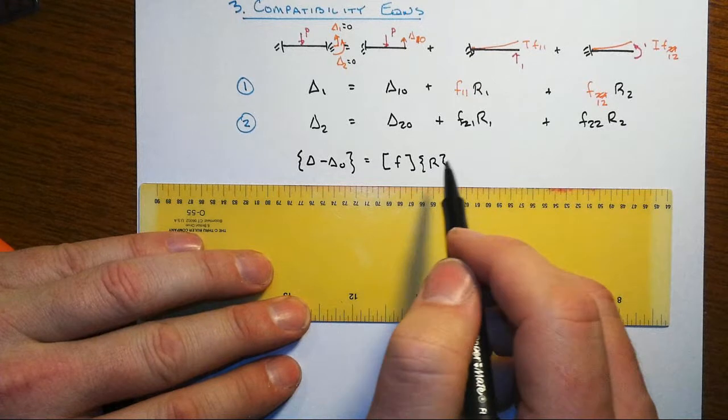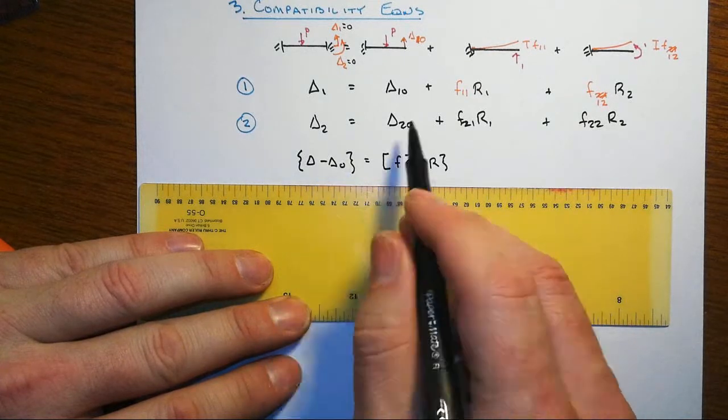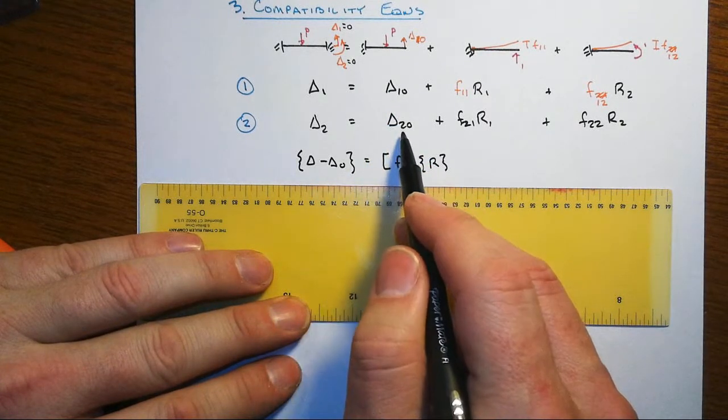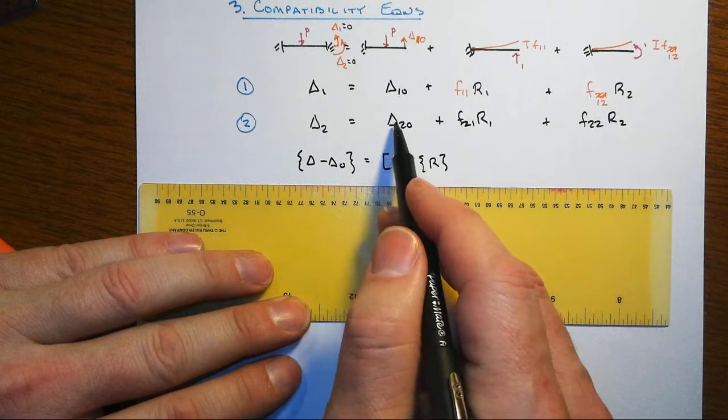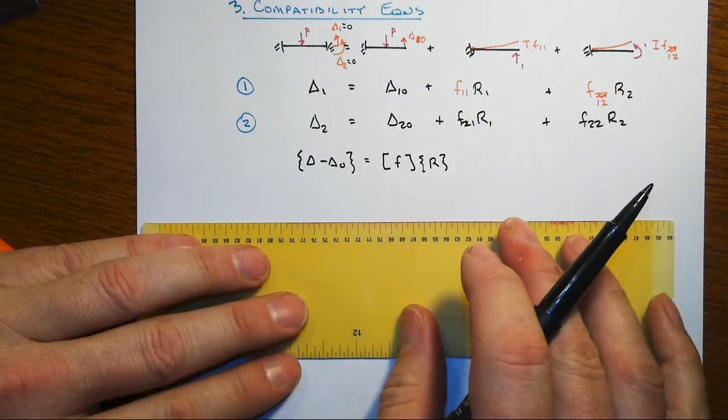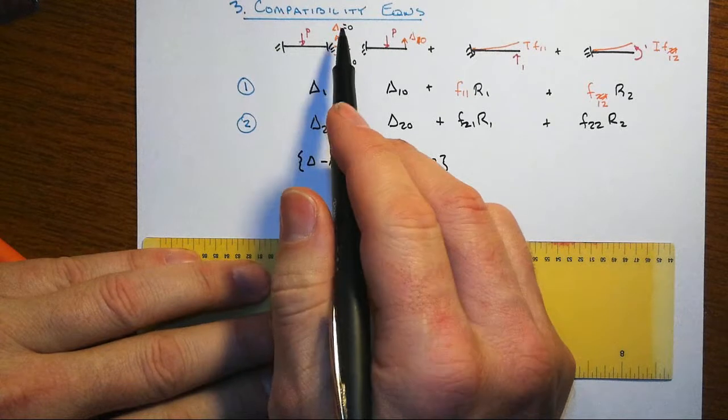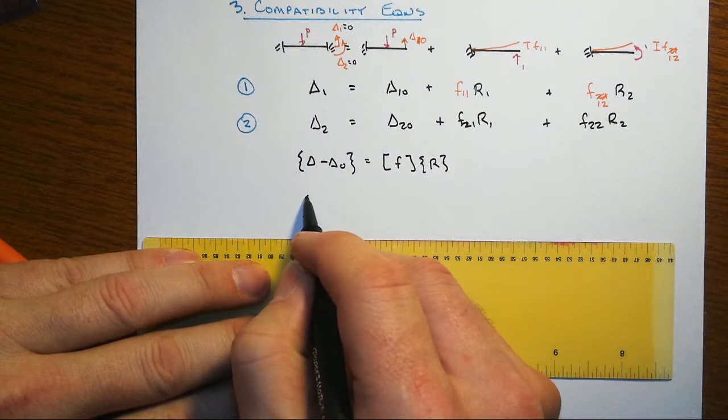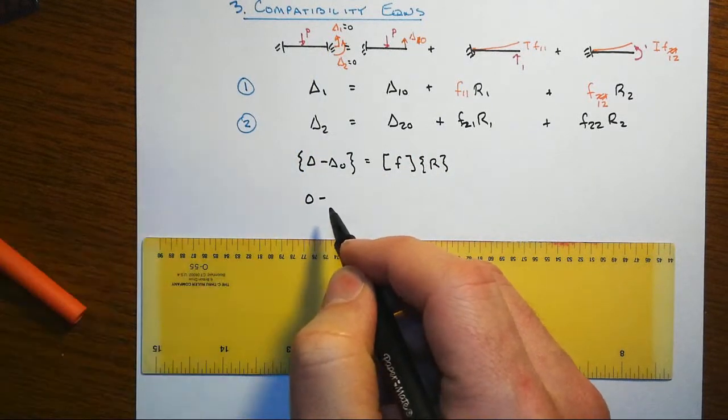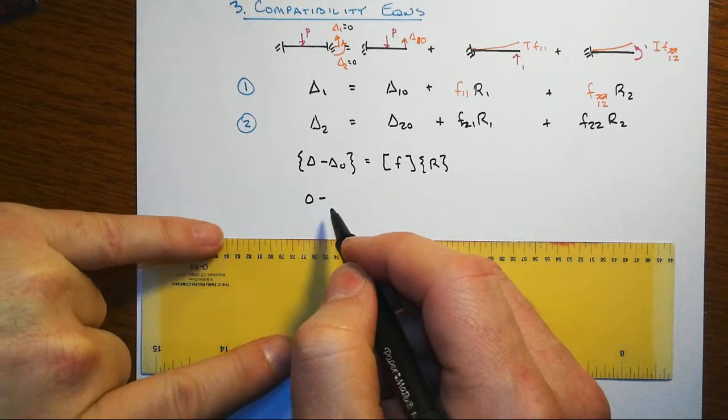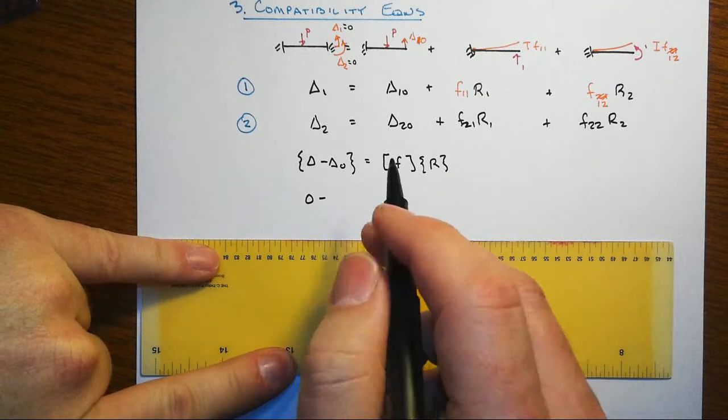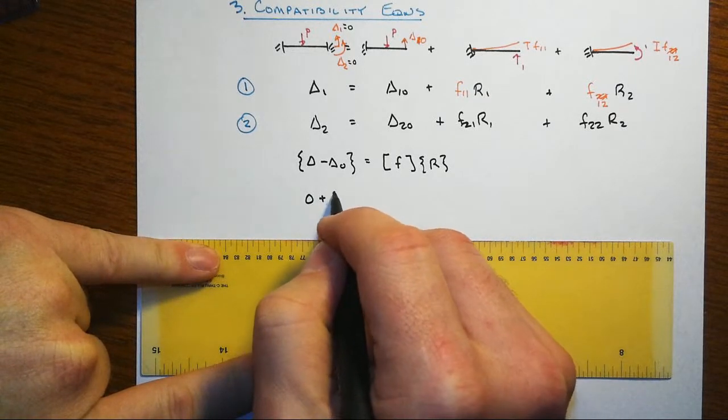We'll collect all the flexibility coefficients there and we can take these delta one O and delta two O, all those coming from the primary system, and move them back over here to the left side. So we'll have on the first equation zero minus, and then remember that first one was minus five PL cubed over 48 EI.